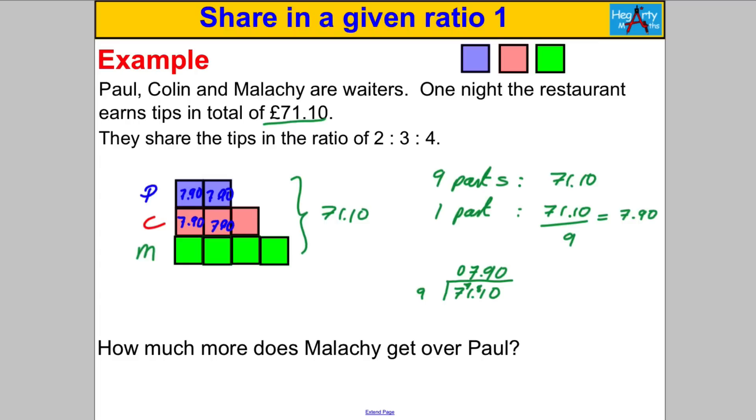And it says our question is how much more does Malachy get over Paul? Well Paul gets 2 boxes, Malachy gets 4 boxes. So the extra bit, Malachy gets 2 extra boxes over Paul. So to work out how much that is, we just have to simply do 2 multiplied by 7 pounds 90. We can easily work this out by doing 2 multiplied by 7 add 90 pence like that. 2 multiplied by 7 is 14, 2 multiplied by 0.9 is 1.8, so plus 1.8, so the answer is 15.8. Now you know you have to give your answer to 2 decimal places when it's money, so 15 point 80 and put a pound sign there. Underline your answer. You are done. That's it for this video. Thanks loads for watching.